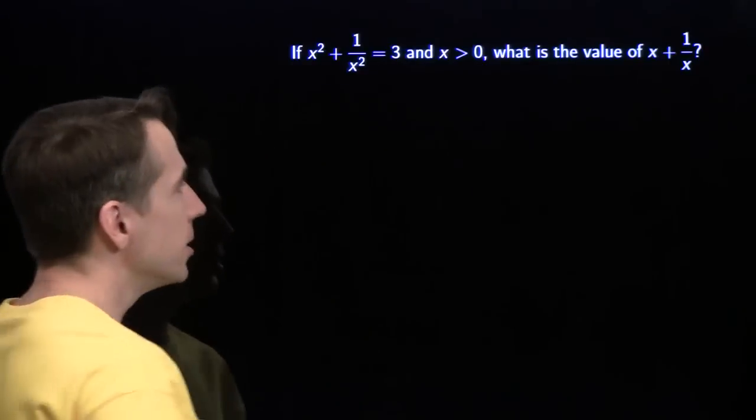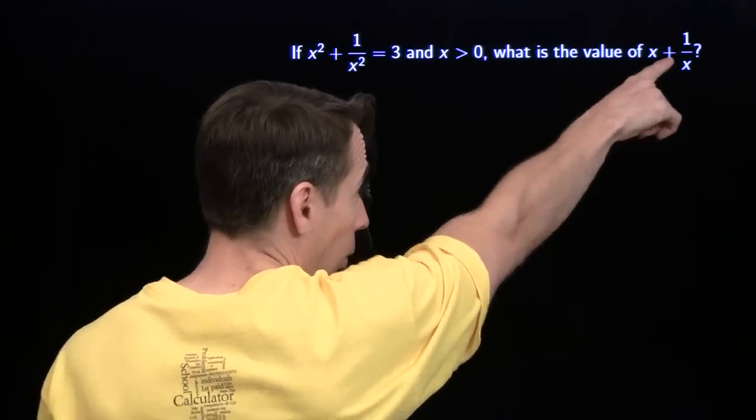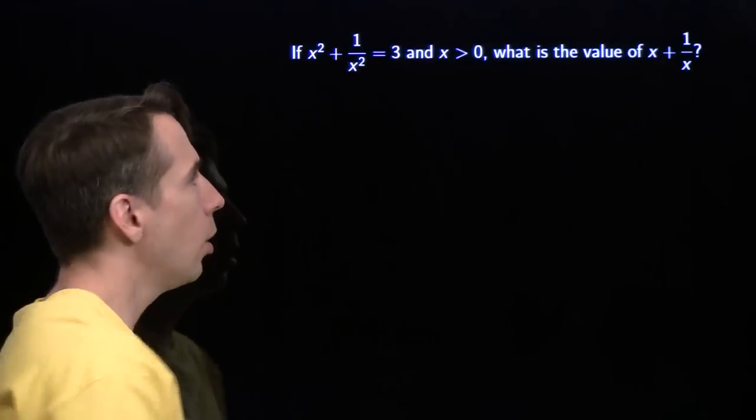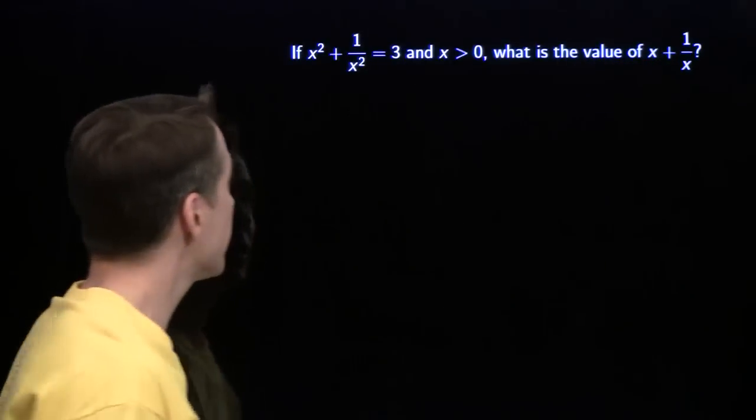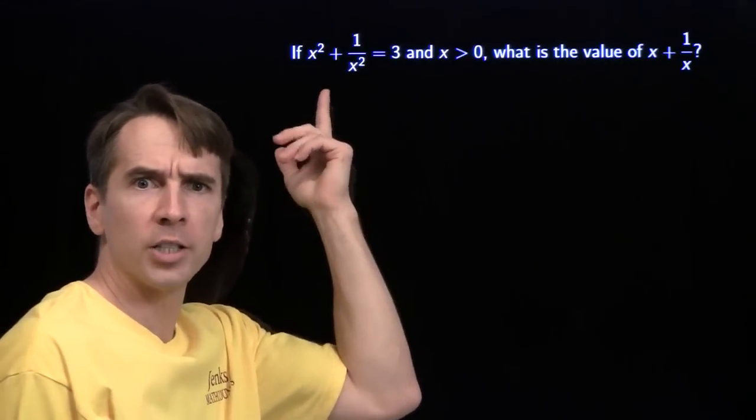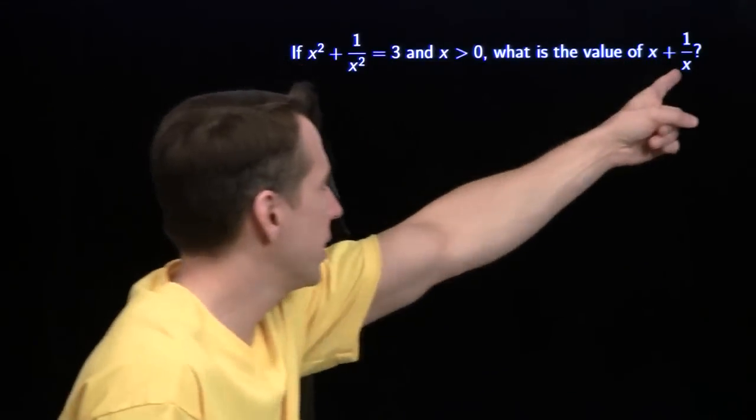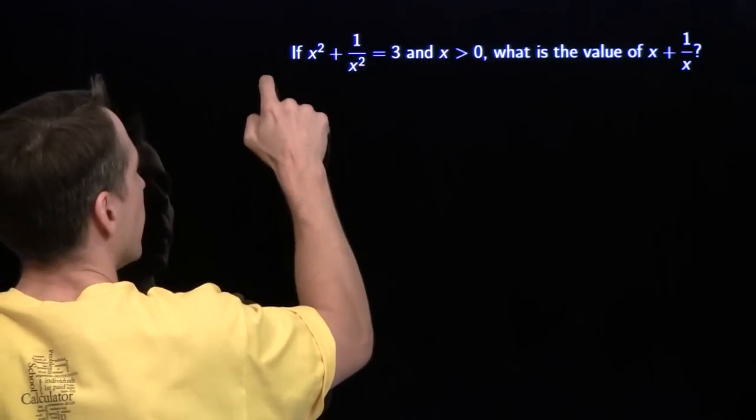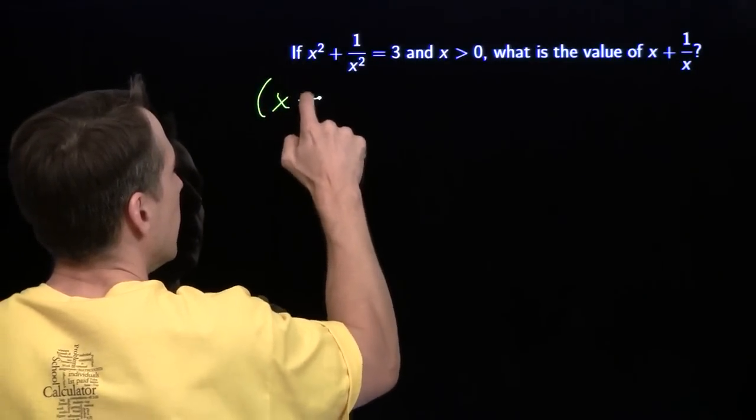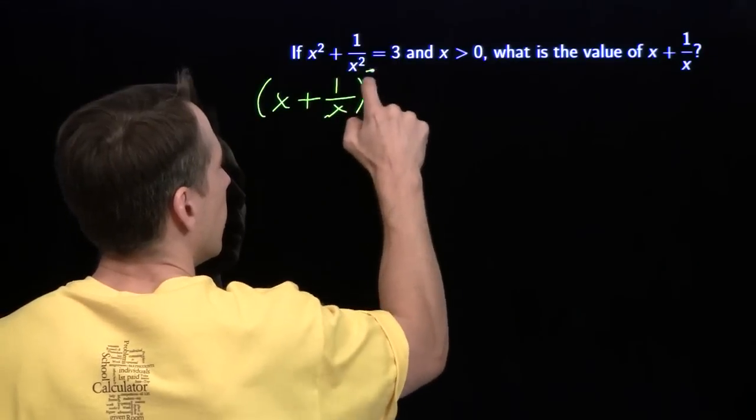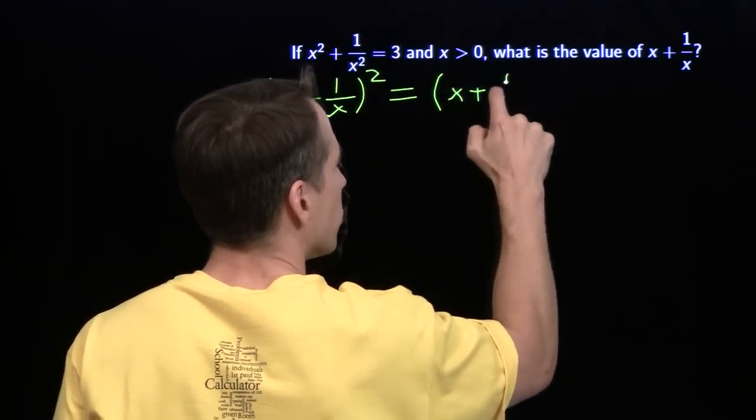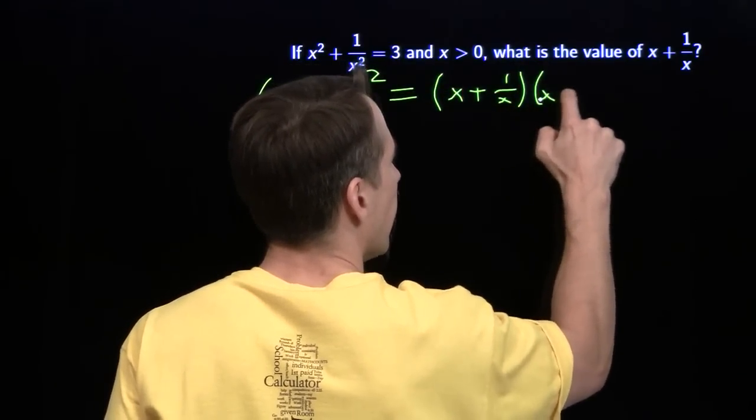Problem-solving strategy number one: relate what we want to what we know. What we want is this x plus 1 over x thing. What we know has an x squared and a 1 over x squared, so we can relate this to what we know by squaring this. We're going to square x plus 1 over x, and that's a job for the distributive property.